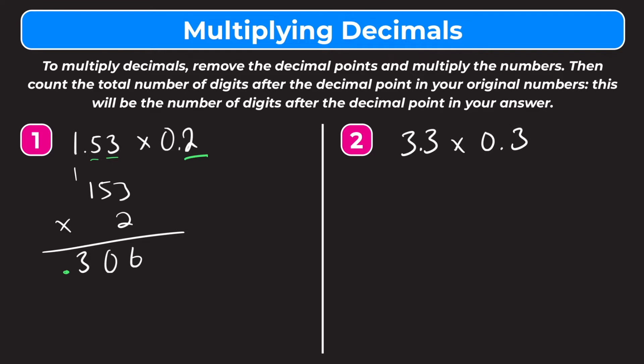Let's try number two. We have 3 and 3 tenths times 3 tenths. So we rewrite this as 33 times 3. Now we just multiply like we would with whole numbers. 3 times 3 is 9, and 3 times 3 is 9 again.